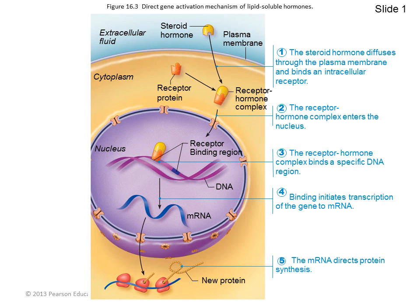Fat-soluble hormones, in contrast — such as steroid and thyroid hormones — act on intracellular receptors that directly activate genes by passing through the membrane into the nucleus and binding to DNA. Therefore, they can directly turn on gene products to produce messenger RNA, and more protein can be made, which gives rise to cellular responses.